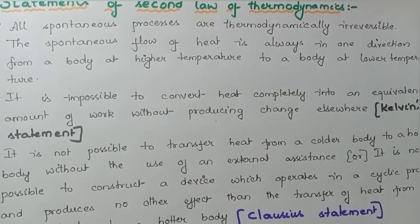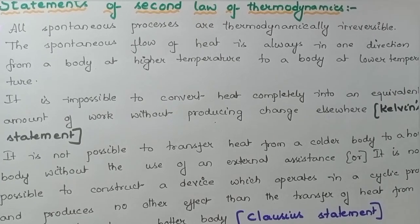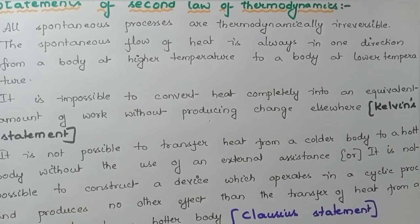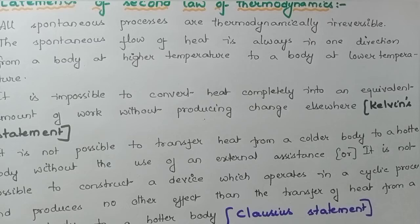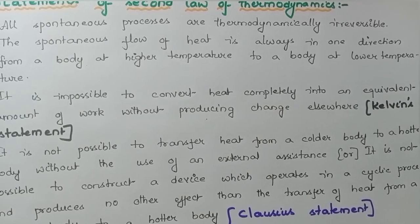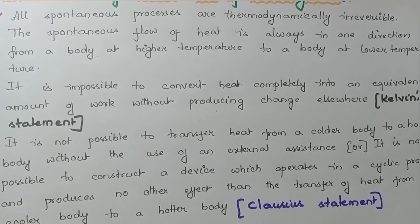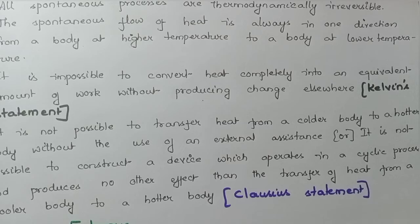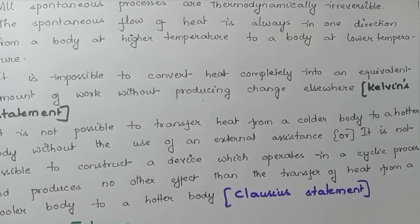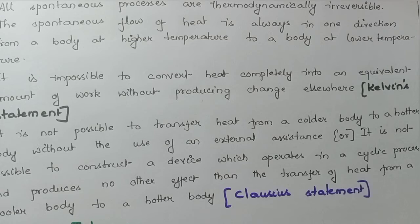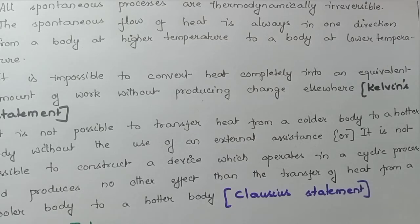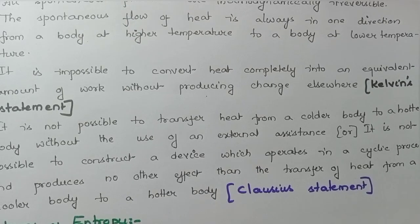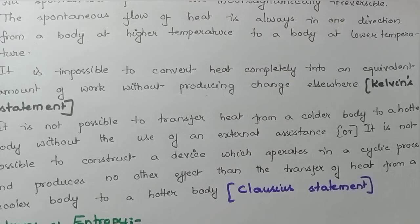Coming to the third statement: it is not possible to convert heat completely into an equal amount of work without producing some change somewhere. This statement was given by Kelvin, hence it is called Kelvin's statement. It is impossible to convert heat completely into an equal amount of work without producing change elsewhere.